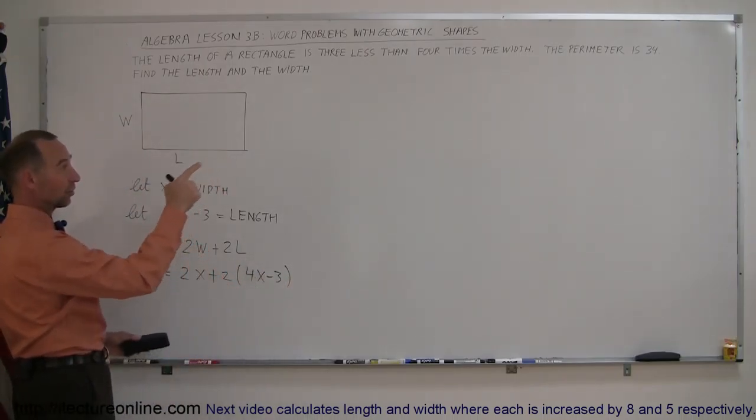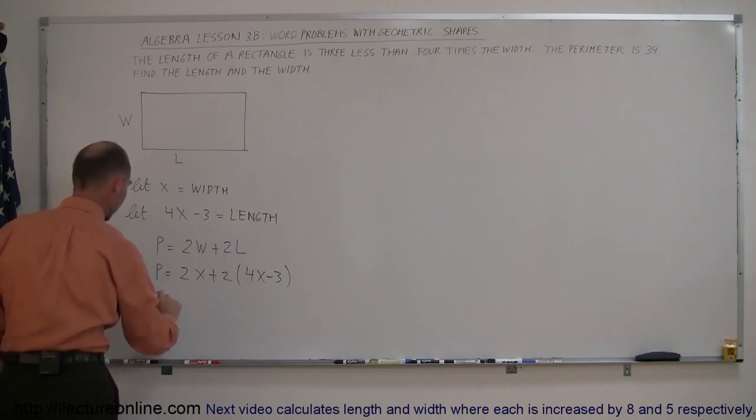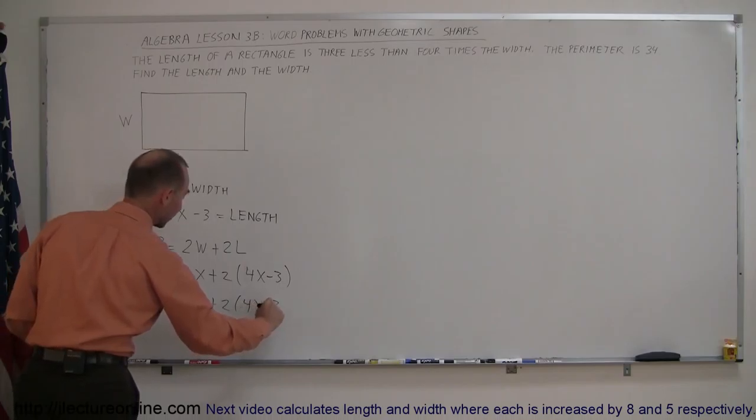And of course, the perimeter was defined as 34. So now I can write that 34 is equal to 2x plus 2 times 4x minus 3.